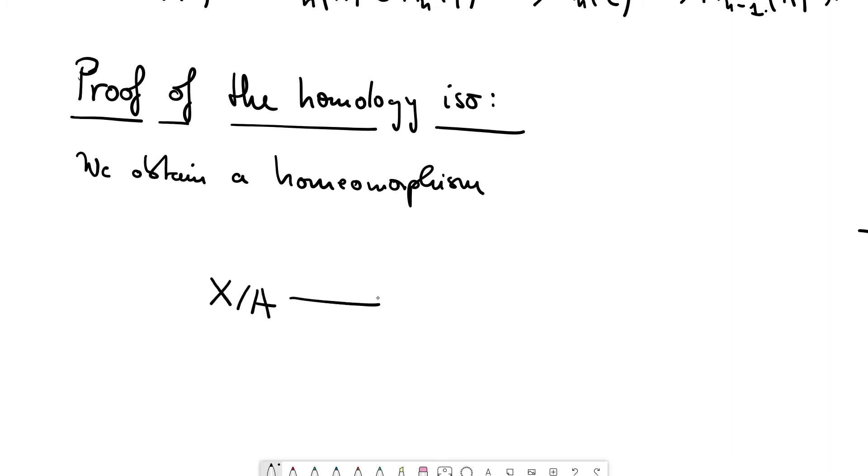So from the quotient space to the other quotient space on the right-hand side, there is this map induced by F bar. This is a very general fact about pushouts.